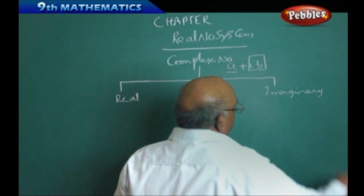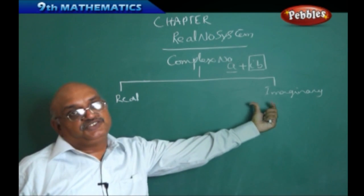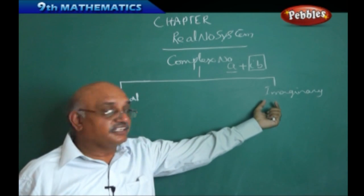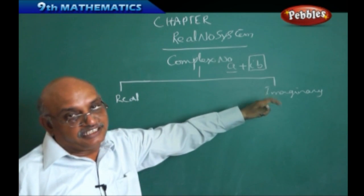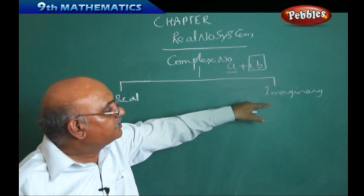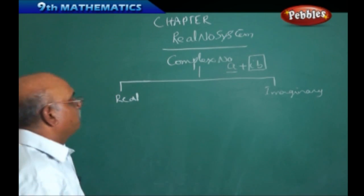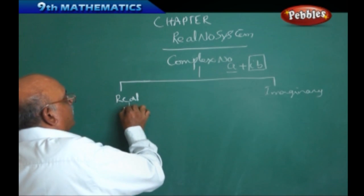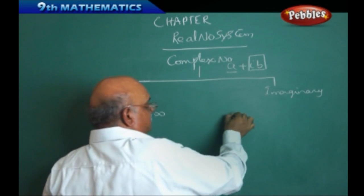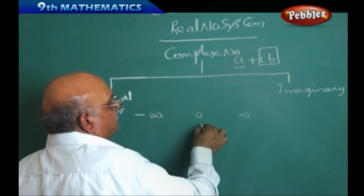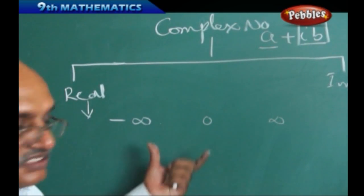There is an extension of the imaginary number system with regard to scientific applications such as black holes. The Higgs boson particle — which we call God's particle — exists on an imaginary plane. These are all applications of the imaginary number system, which is also part of the complex number system. In the real number system, it ranges from minus infinity to plus infinity, with zero in between — this is called the extended real number system.